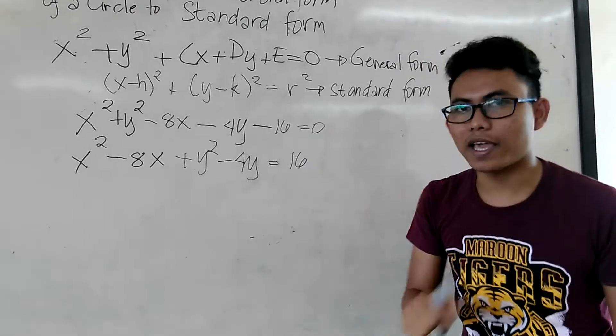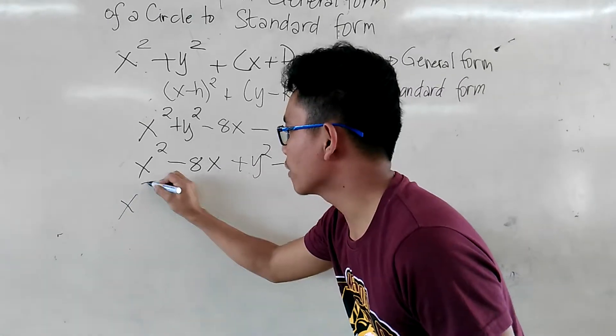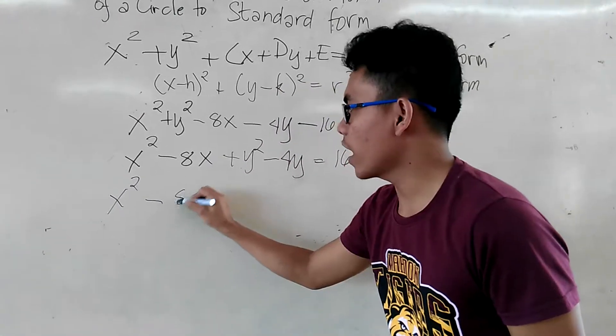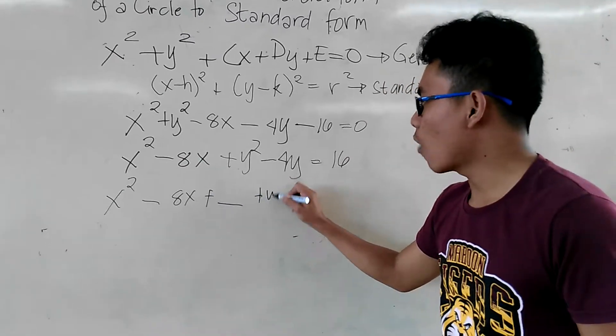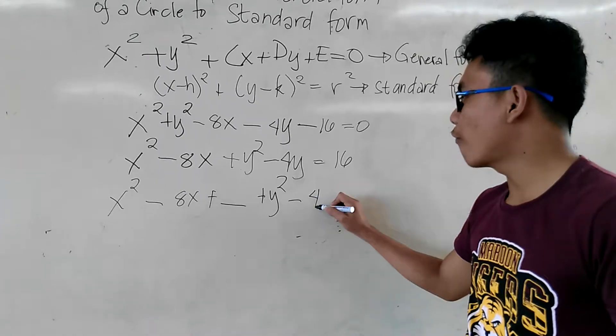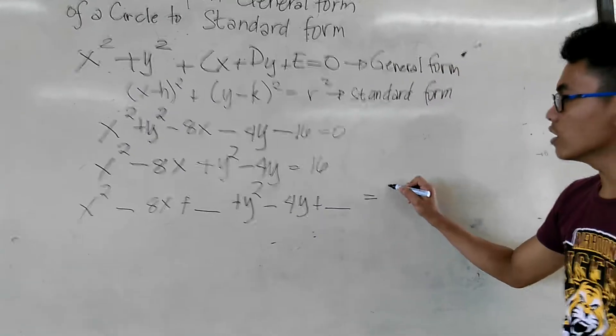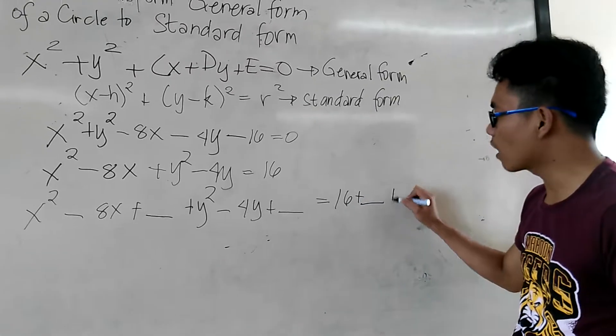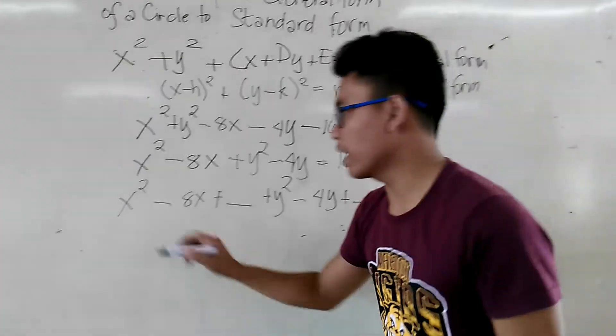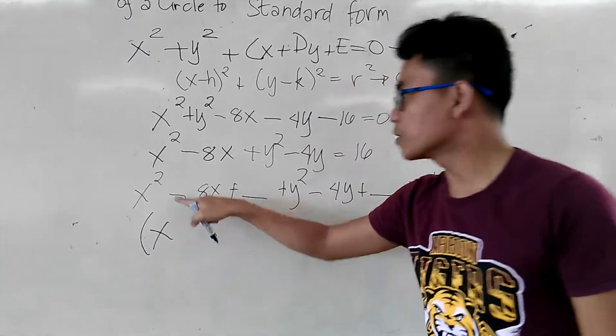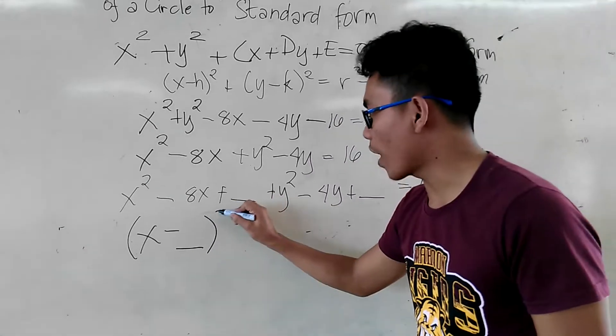Okay, so makinig ng maiging. Kasi ito na po ang start. x squared minus 8x plus blank plus y squared minus 4y plus blank is equal to 16 plus blank plus blank. Okay? Next, may isa pa rin. We have x. Since minus po ito, minus blank. Then, don't forget to write the squared.